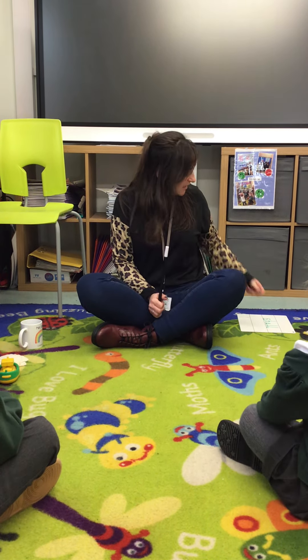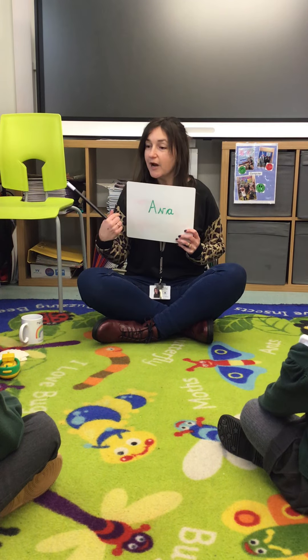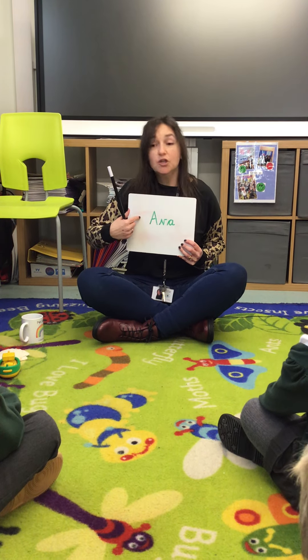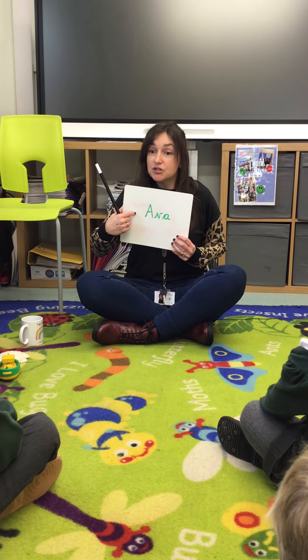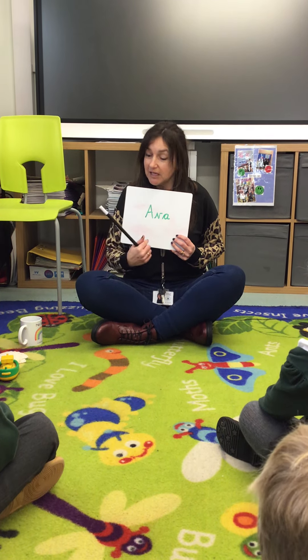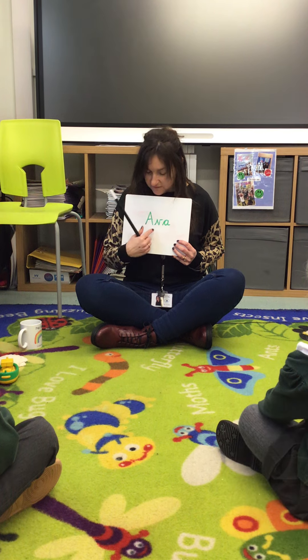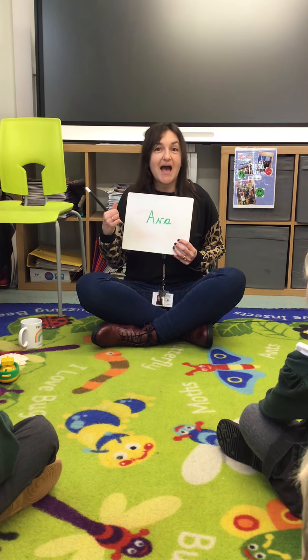Now we're going to do Ava. Ava begins with a, Ava begins with a, A, Ava begins with a. Fantastic! And boys and girls, when we write the word Ava, it looks like Ava's name begins with the sound a, but it doesn't — because the sound at the beginning of the word Ava is a, not a. Fantastic, well done everybody.